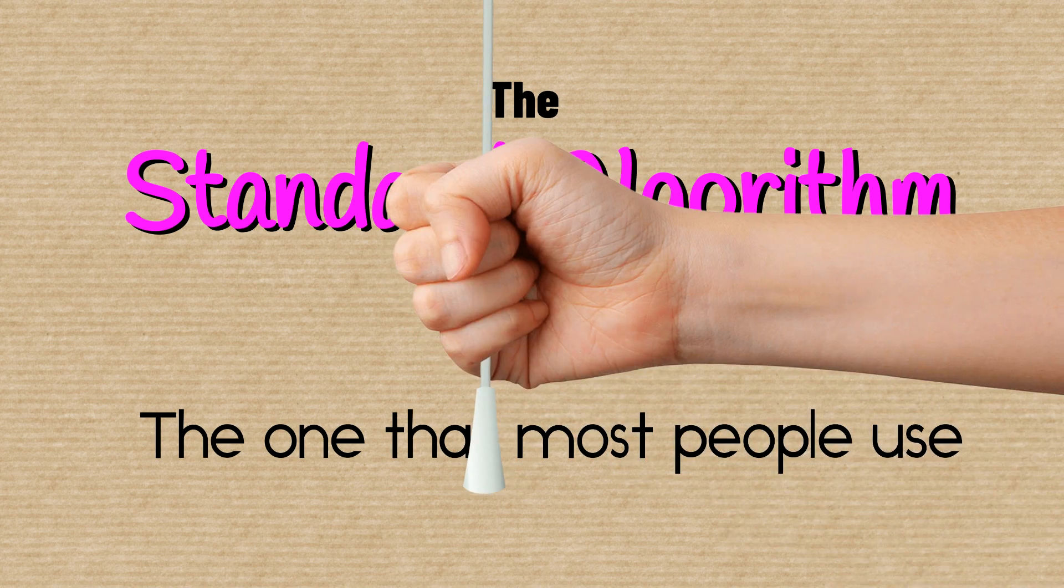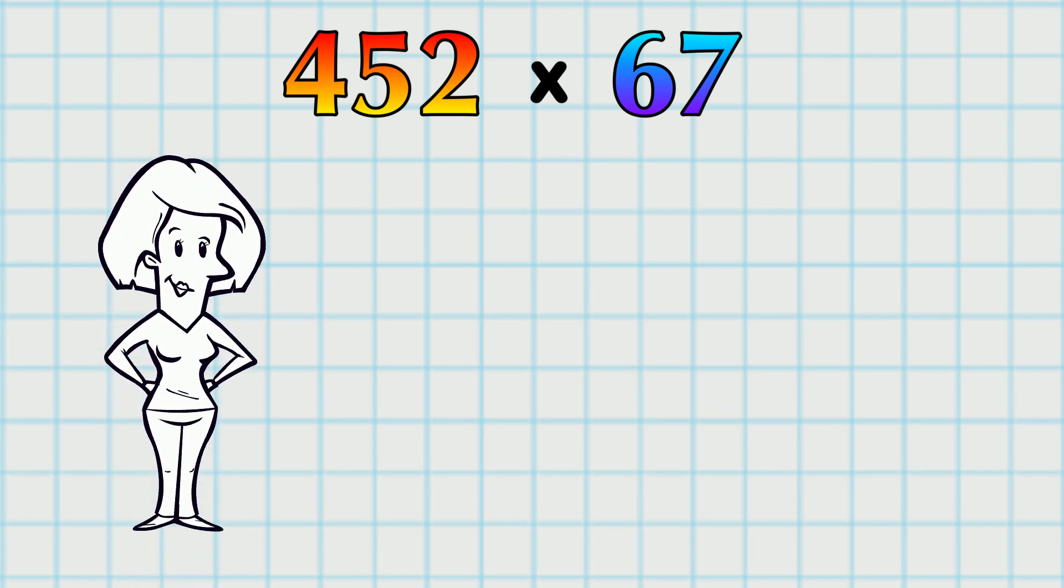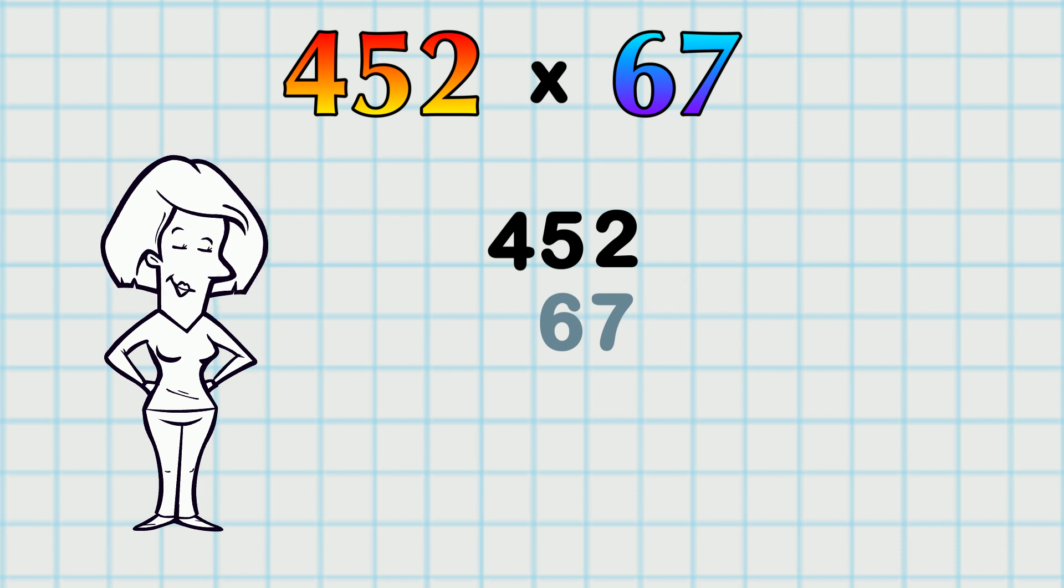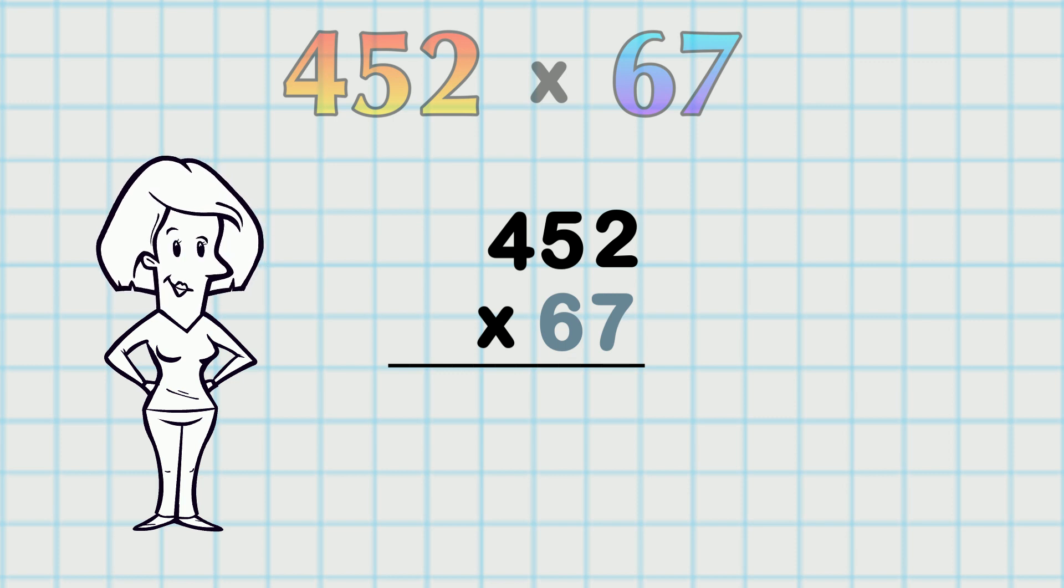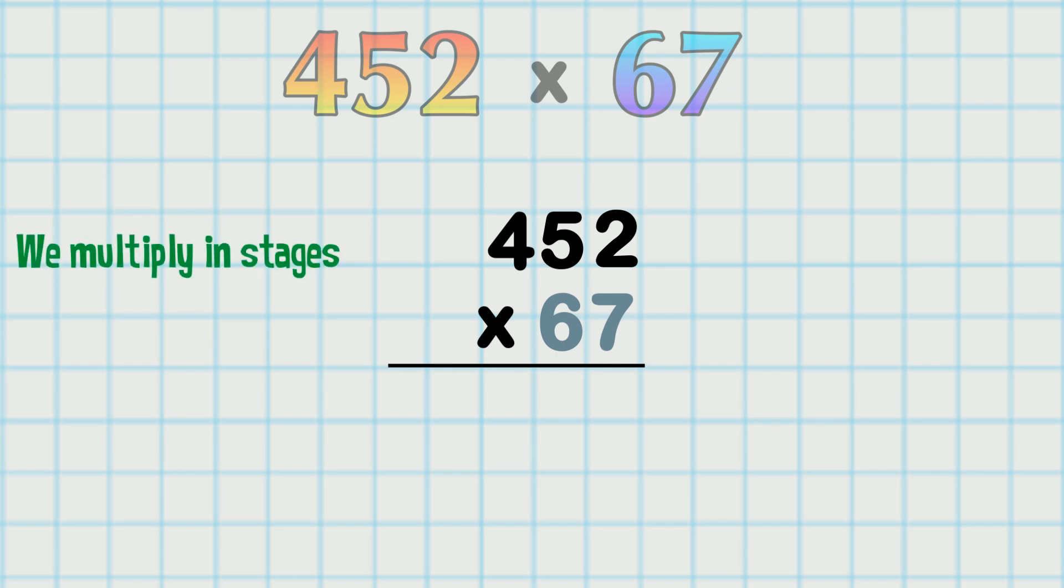Let's try it out on this. We line up the figures like this - biggest number on top and put in the multiplication sign. The squared paper in your math book is perfect for helping you set it out. We multiply in stages.